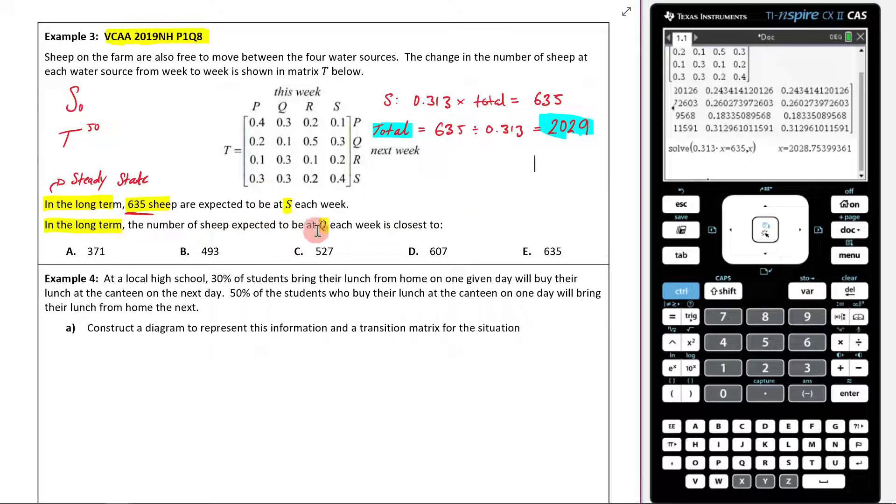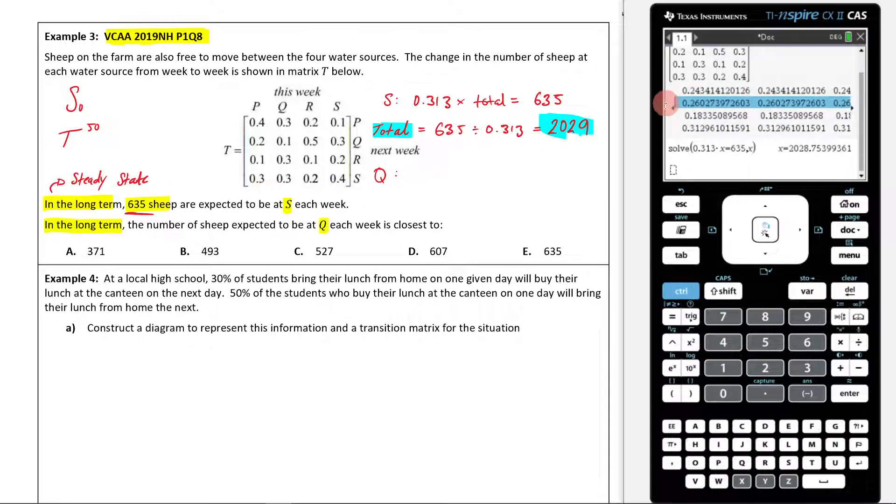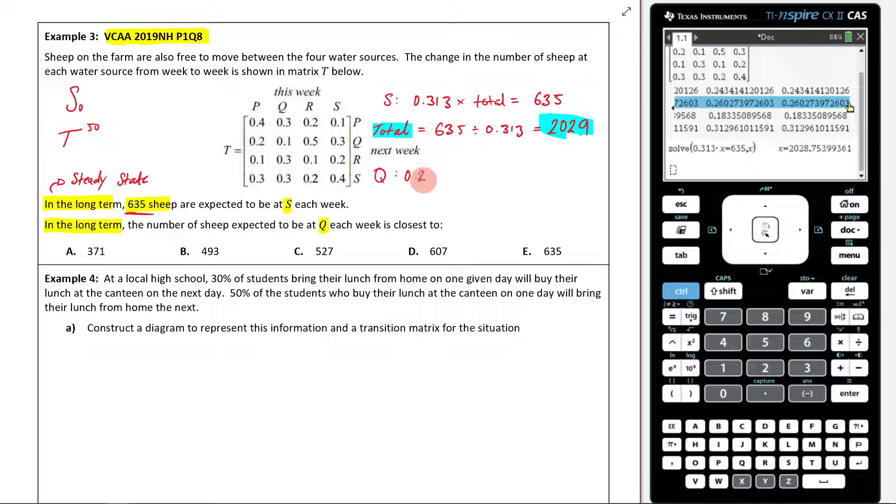So in total, I have 2029 sheep. Now, if I'm after the number of sheep at Q, what I need to do is, if I come back to my transition matrix, I know that Q was my second row. 26% of the sheep are at Q. So what I need to do is say 0.260 times by the total amount. We know that the total amount is 2029. So 26% of this 2029 is going to be what? I'll type in 0.26 times by 2029.